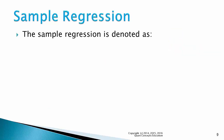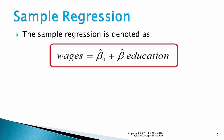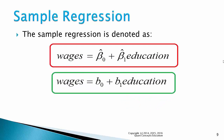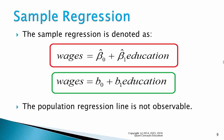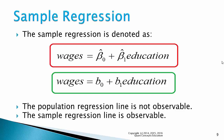The population regression is the true relationship between wages and education, whereas the sample regression is only a sample estimate of that relationship. The sample regression line is denoted as wages equals beta hat 0 plus beta hat 1 times education. The hat on top of the betas tells us that they are estimates of the population betas. The main thing to remember is that the population regression line is not observable, but it is the true relationship between your dependent and independent variables. The sample regression line is observable and is used as our estimate of the population regression line.